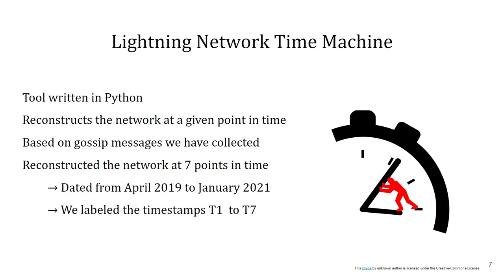It does so by deduplicating these messages — meaning duplicates are removed — then ordering them by their timestamp and replaying them in correct order until the desired point in time is reached, creating a network which is close to the one in the past. We have utilized the Time Machine to recreate the network at 7 points in time, dating from April 2019 to January 2021, which we ordered by timestamp from T1 to T7.